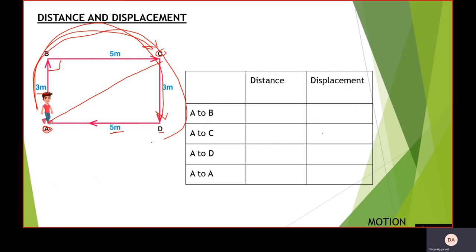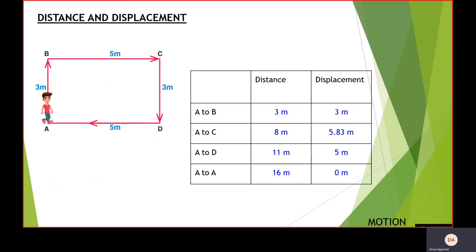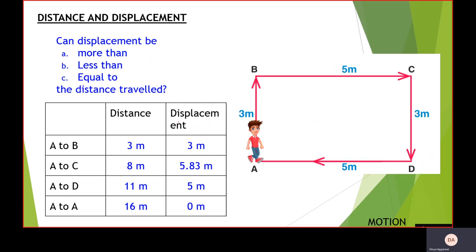The next case is A to A, where the person comes back to the initial position. For the distance, we add up all the paths traveled: AB plus BC plus CD plus DA, which is 8 plus 8 equals 16 meters. For the displacement, since the initial and final positions are both the same, the displacement is 0 meters.